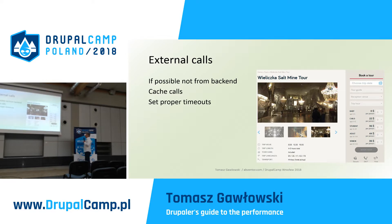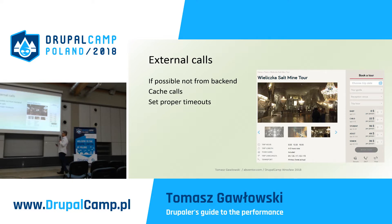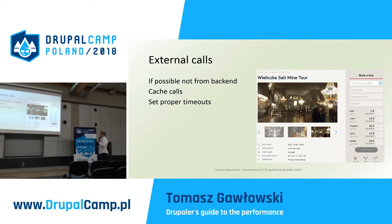For external calls: if possible, don't call from the backend. If you call an external service from your backend, you add that call's time to your response. If possible, call via the front-end. Cache calls if possible — push the answer to your local cache, to database or Redis, whatever. And set proper timeouts.